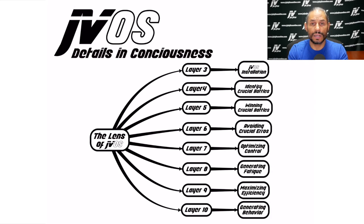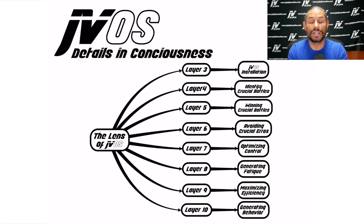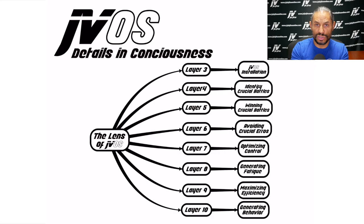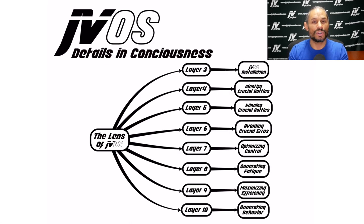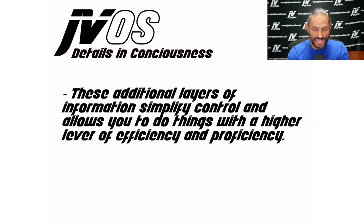Layer ten is an unbelievably powerful concept: generating behavior. Behavior can be generated a variety of ways, even through simple suggestiveness. The ability to be suggestive will force the opponent to generate a behavior. The way you distribute your weight in a particular direction forces an opponent to behave a particular way. When you understand what buttons to push, there is a timeline of events. When you start to dominate or generate the timeline of events within motion and time, this is an incredibly powerful tool — sometimes I refer to it as the force. I am doing something which makes you do something else. These additional layers of information simplify control and allow you to do things with a higher level of efficiency and proficiency.